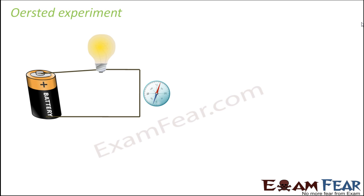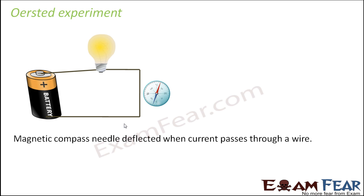Now, in order to understand if a magnetic field exists or if a magnetic effect is being produced by the current, he placed a magnetic compass near the wire. If the current indeed produces a magnetic field, the magnetic compass should show some deflection. If it deflected, that would mean a magnetic field exists there — and since there is no magnet present, the magnetic effect must be produced by the current flowing through the wire. And as expected, the magnetic compass needle deflected when current passed through the wire.